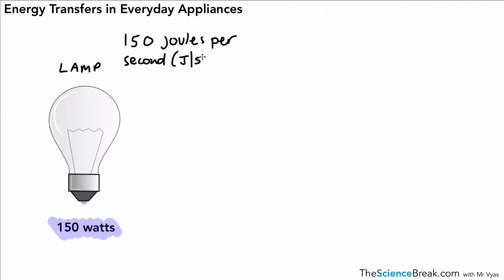150 joules per second. Watts and joules per second are the same thing. Remember to write the J as a capital when you're writing J/s.